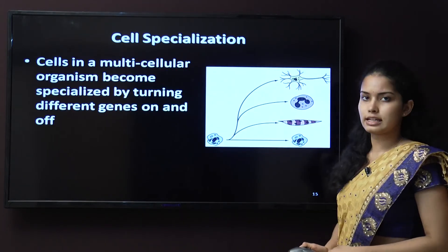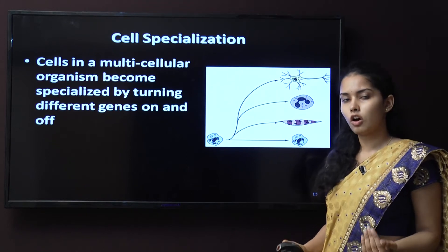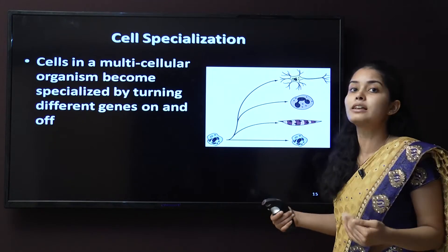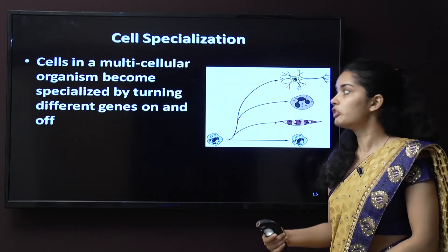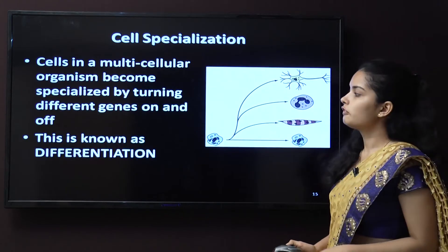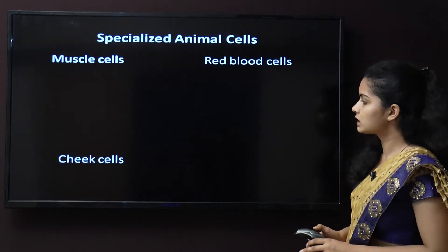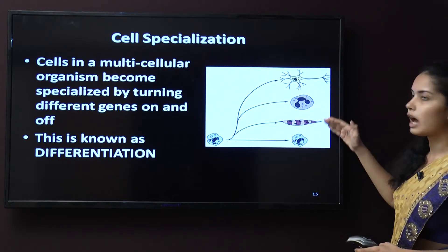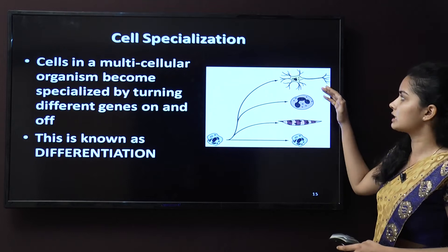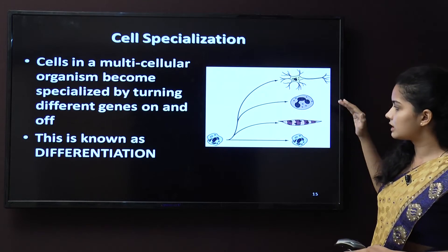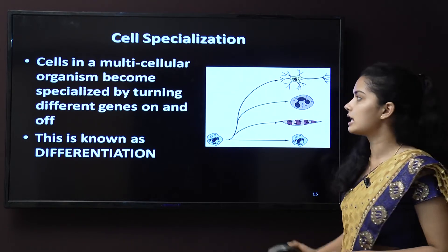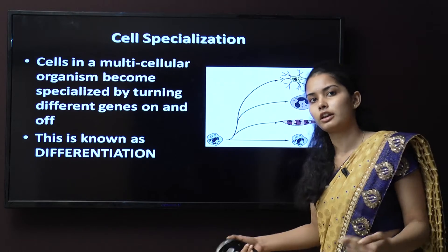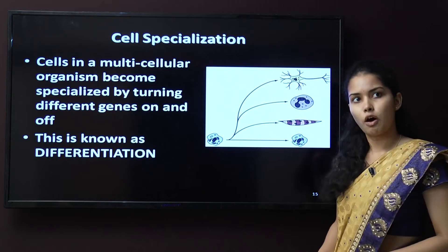Cell specialization: cells in multicellular organisms differentiate — they become specialized by turning different genes on and off. This is known as differentiation. From one cell, the whole range of other cells are formed — neuron cells, blood cells, muscle cells — all formed by the method of differentiation through genes turning on and turning off.